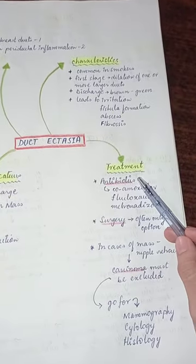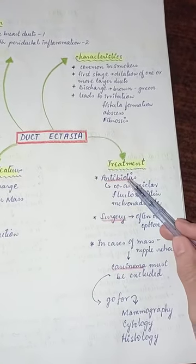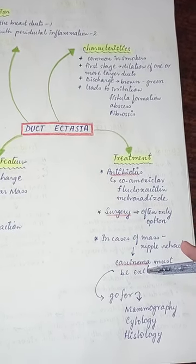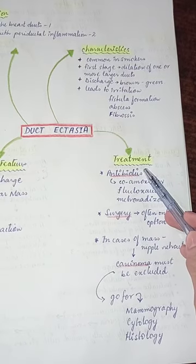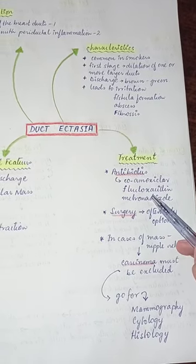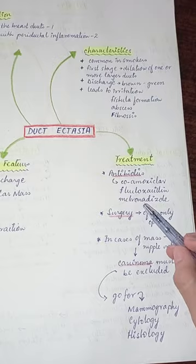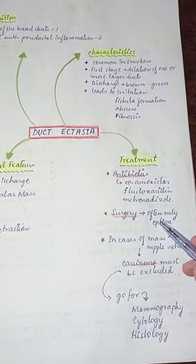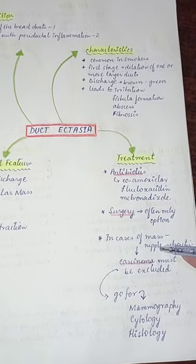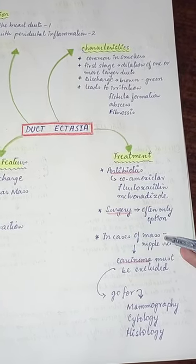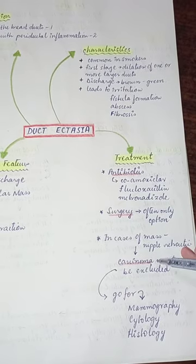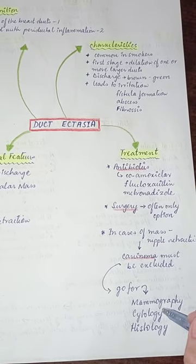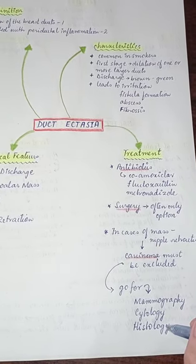For treatment, there are three methods: antibiotics, a surgical option, and exclusion of carcinoma. For inflammation, we will give antibiotics — co-amoxiclav, flucloxacillin, and metronidazole. Surgery is the only option in certain cases. If a patient presents with nipple retraction or a mass, we will first exclude carcinoma, for which we go for mammography, cytological examination, or histological examination of the patient.